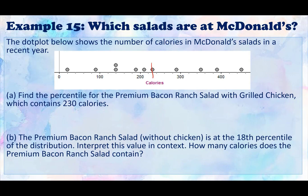Now, remember that a percentile is the percent of values in a distribution that are less than the individual's data value. So if you look, we have one, two, three, four, five, six that are less. And we're going to divide that by the total number of salads that we have, and that's going to be 11.